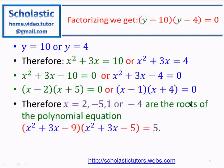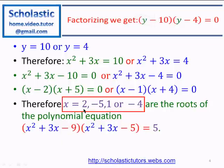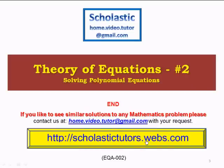From the first equation: x = 2 or x = -5. From the second equation: x = 1 or x = -4. Therefore, the solution to the polynomial equation (x² + 3x - 9)(x² + 3x - 5) = 5 is x = 2, -5, 1, or -4. There are four real roots for this polynomial equation. Thank you.